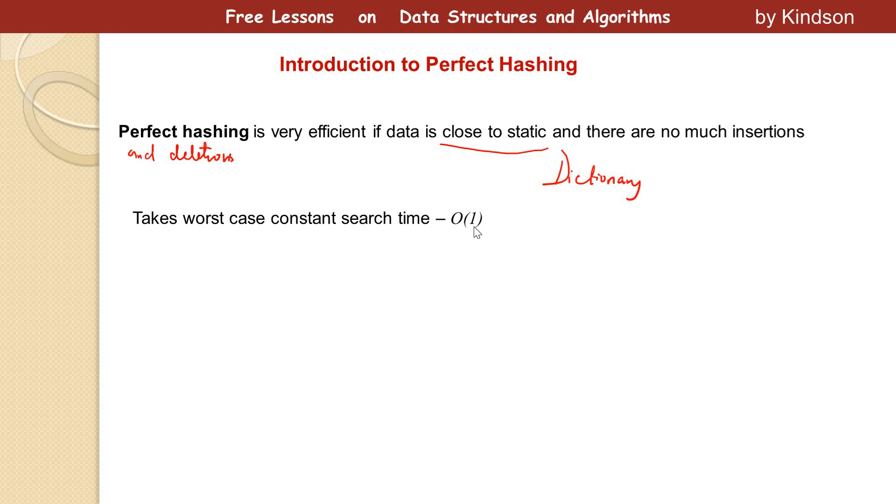Secondly, worst case space will also be linear, O(n). That makes sense because the more you add items into the table, the more the space grows. In this case we have linear space.